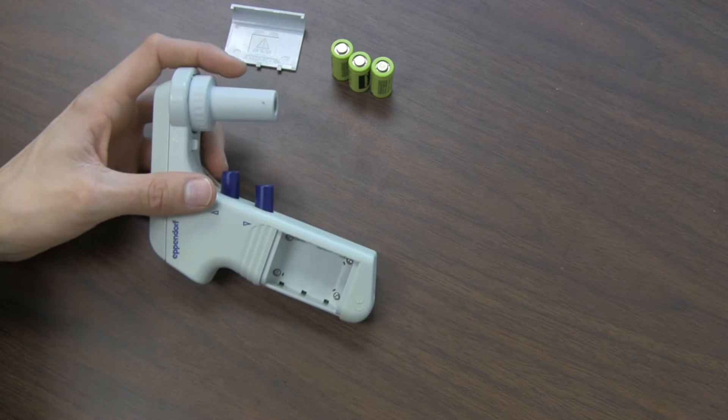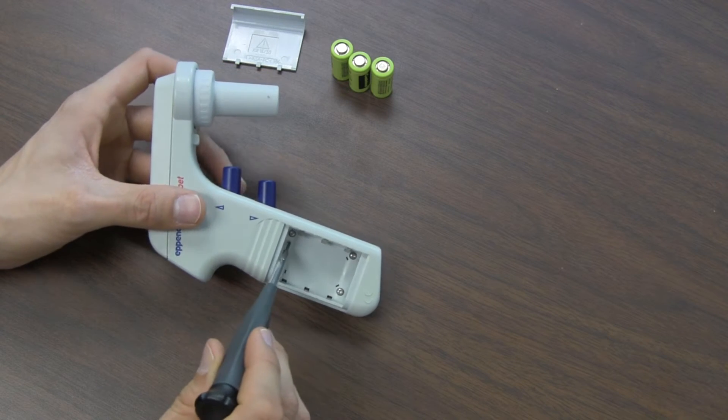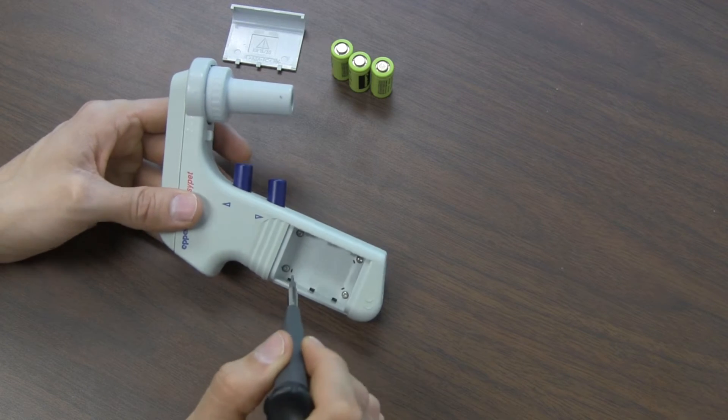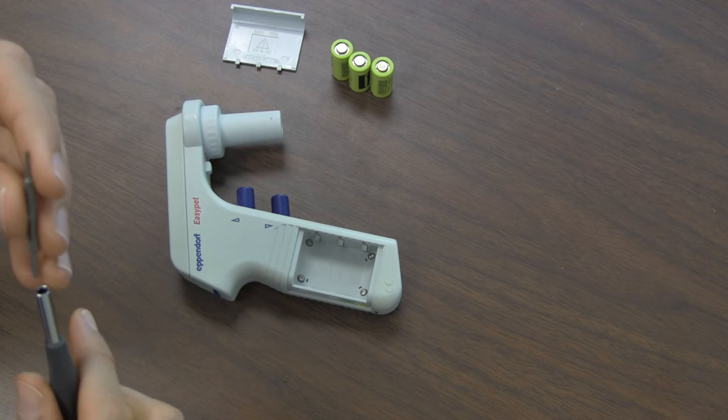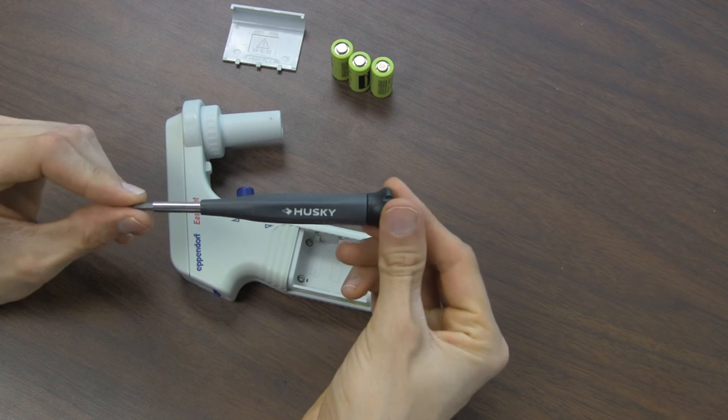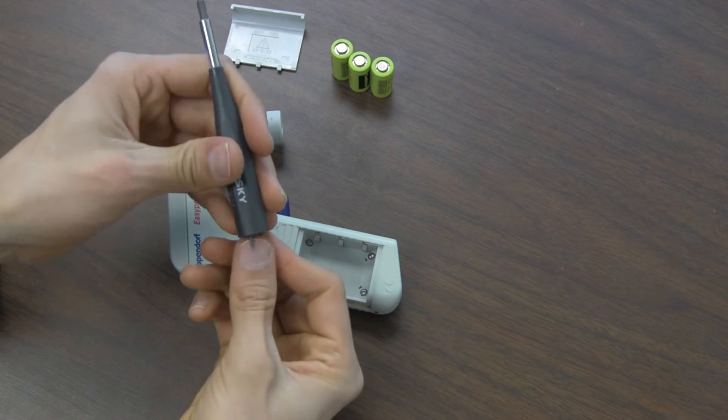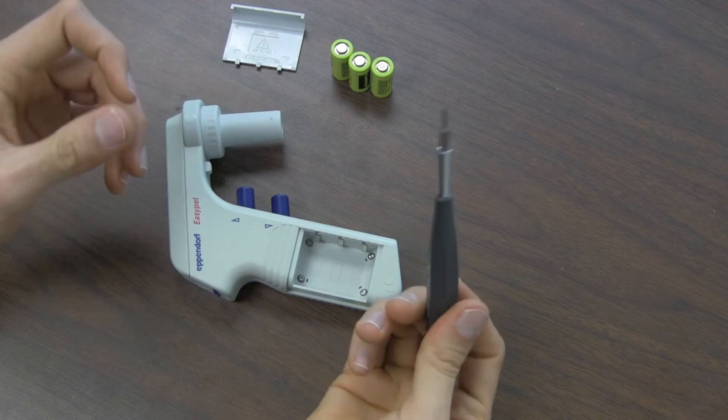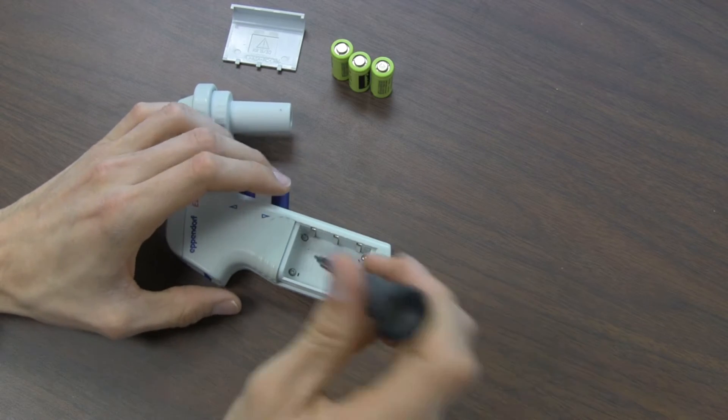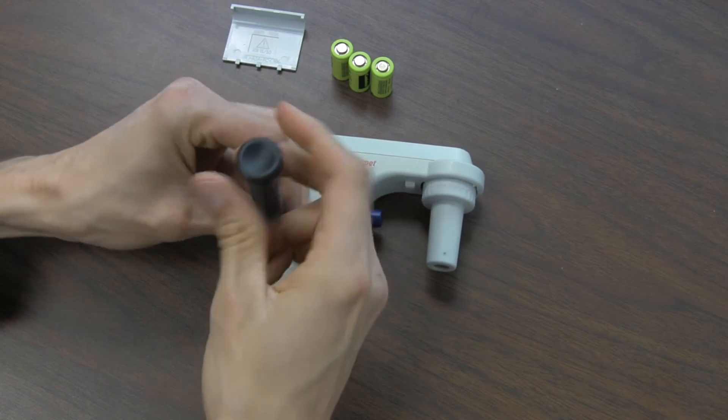And then you'll find on the inside of the battery compartment these four screws. And these screws are Torx screws. They are T6 Torx, so you can buy from Home Depot, Husky brand screwdriver, which has several Torx bits in it. And this screwdriver is five dollars. It'll allow you to undo these screws. So it's pretty easy, you just remove these screws.